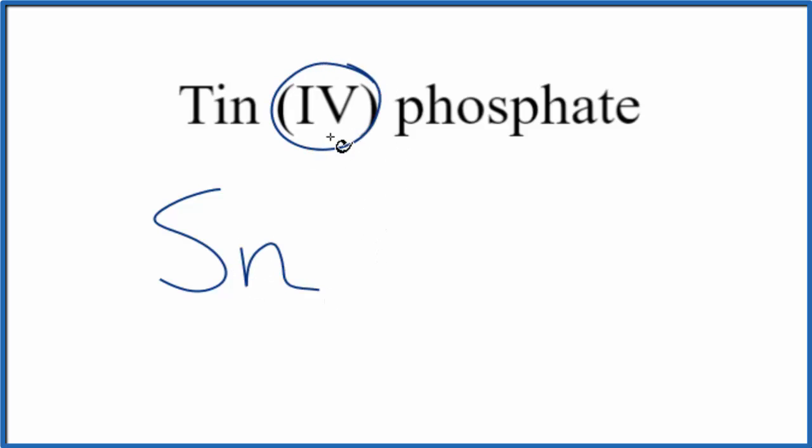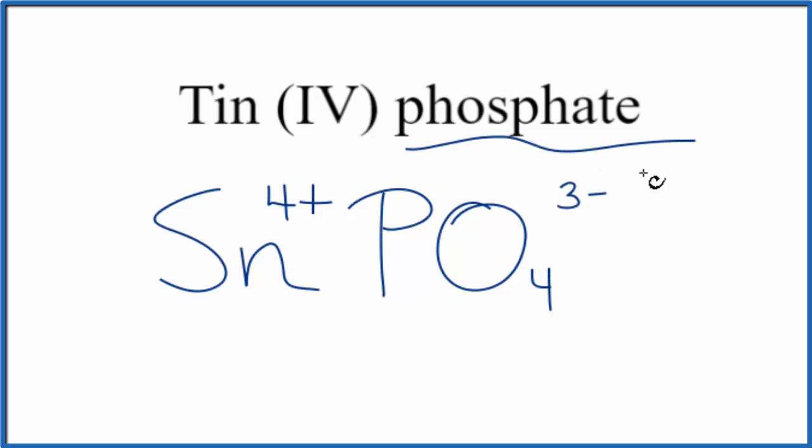The Roman numeral 4 here tells us that tin's a transition metal. It has a 4-plus charge. The phosphate, you won't find that on the periodic table. When you see A-T-E, you're thinking polyatomic ion. So you've either memorized that the phosphate ion is PO4 with a 3- charge, or if you're allowed, you can look it up. Probably a good one to memorize.